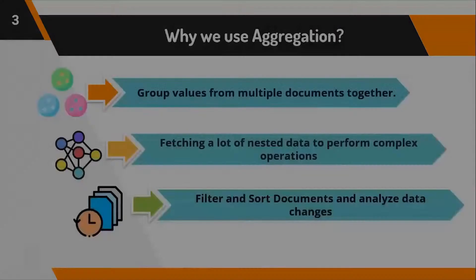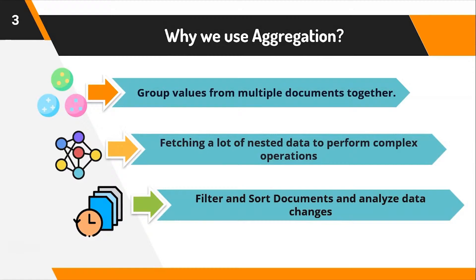Let us now understand why we use aggregation. Data from different sources is gathered by an aggregation method, which is then processed to a single outcome. To perform an aggregate function in a relational database, the database management system typically extracts data from multiple rows of the same table. But in a document-oriented database like MongoDB, the database will gather information from various documents in the same collection, grouping values from multiple documents together into a single resultant value.